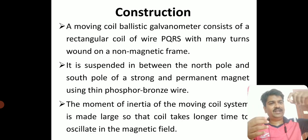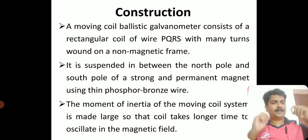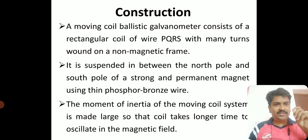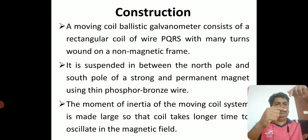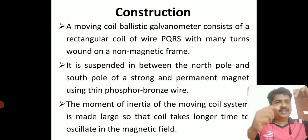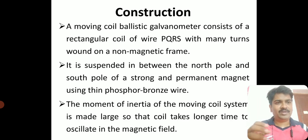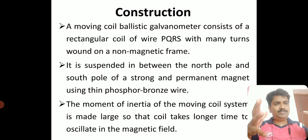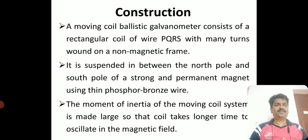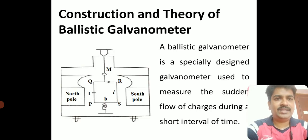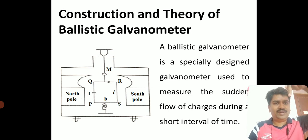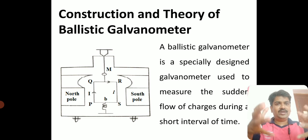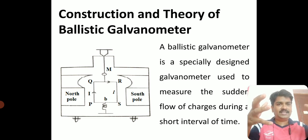The coil is suspended by means of a very thin phosphor bronze wire between two strong permanent magnets. You can look at the diagram — the rectangular coil PQRS is suspended by the phosphor bronze wire and placed between the north and south poles of the magnet.